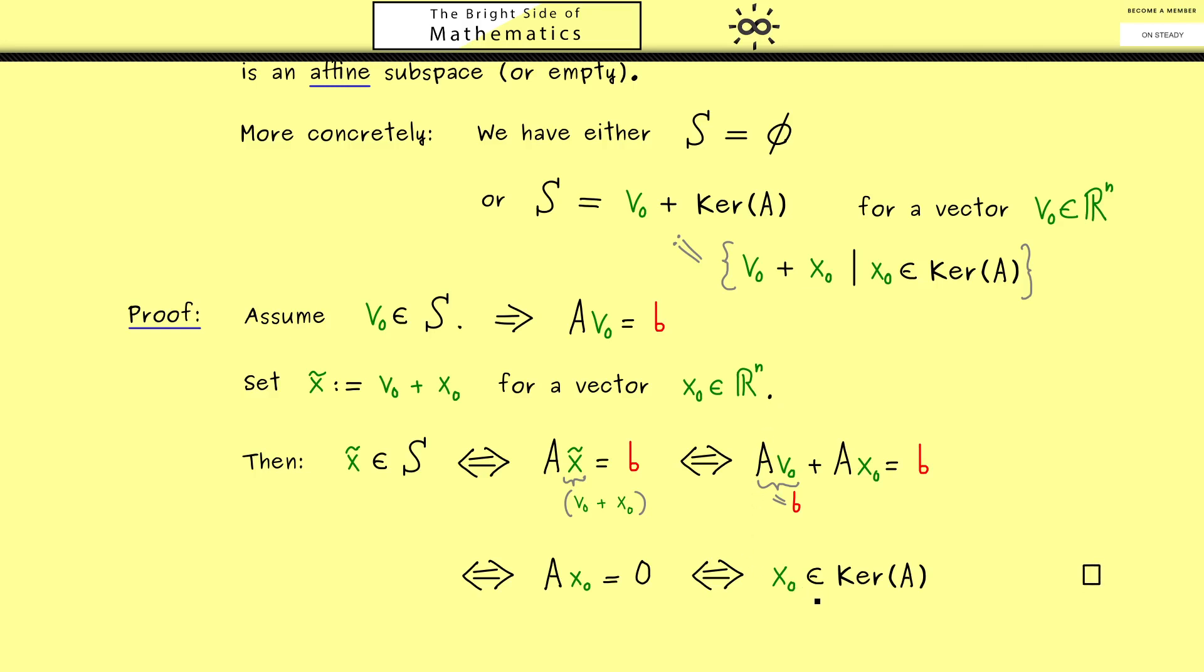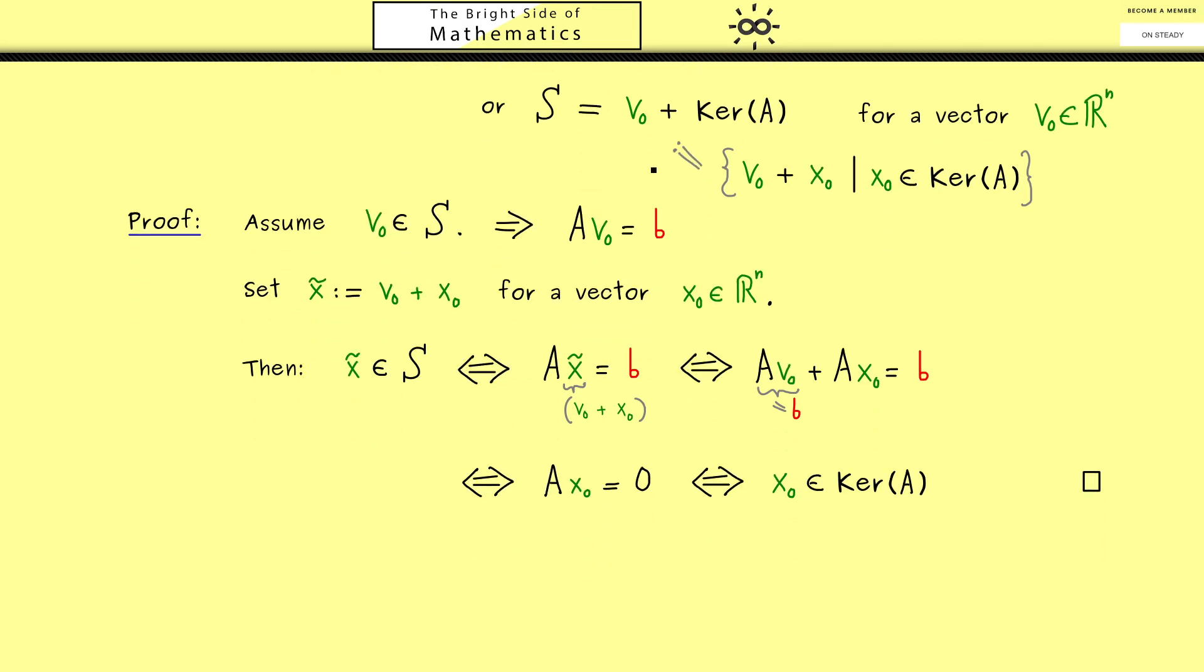So now we can remember this is indeed a big deal, because for any system, for any system of linear equations, we now know how the set of solutions S looks like. You just need one solution v_0 and the knowledge of the kernel of A to get the whole set S.